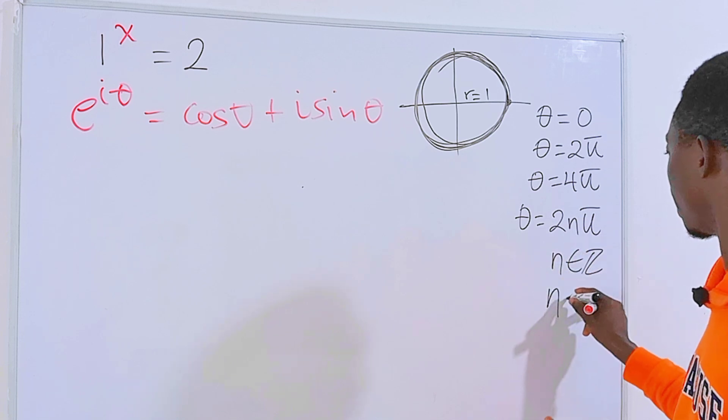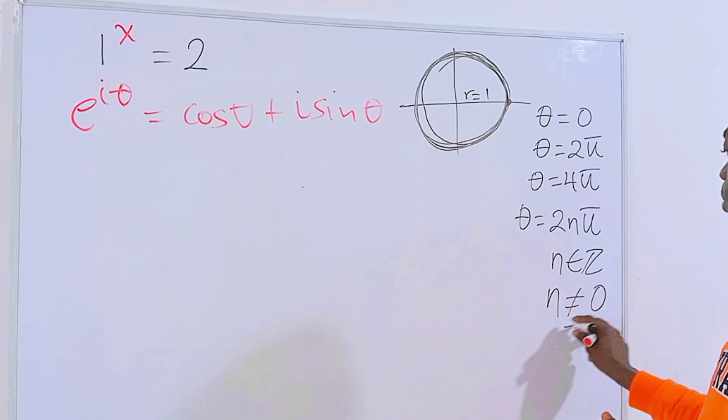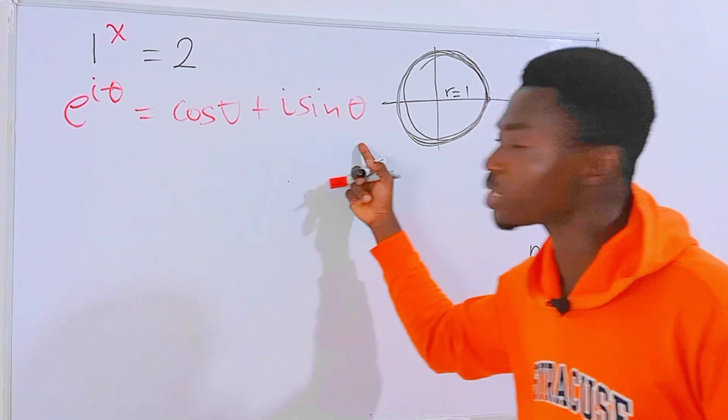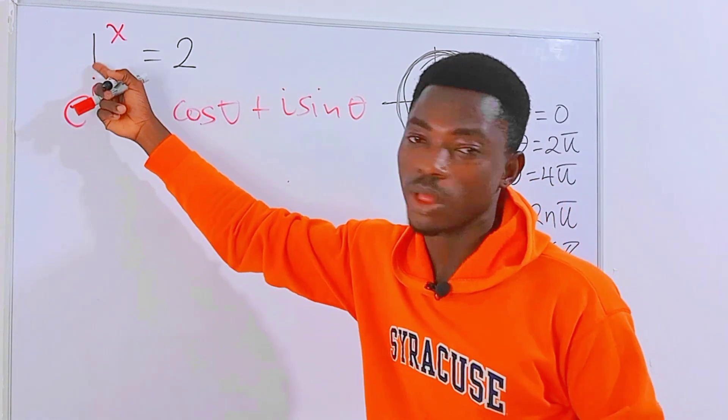But n is never equal to 0. We'll come to this later. Let's try and substitute this into Euler's equation to see whether we will get an equation for this one.